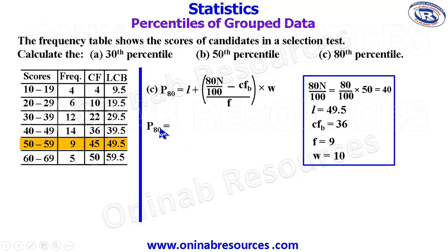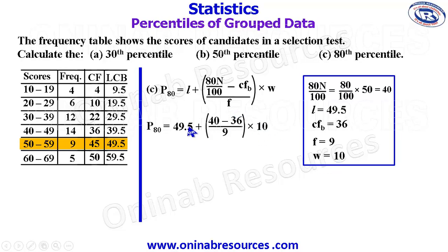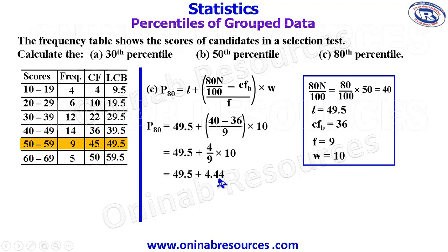We substitute to get the 88th percentile. L is 49.5, plus 88N over 100 which is 44, minus CFB which is 36, divide by 9 as F, then multiply by 10. This gives 49.5 plus 4 over 9 multiplied by 10. 40 divided by 9 gives 4.44. Adding it to 49.5 gives 53.94, representing the 88th percentile of this distribution.